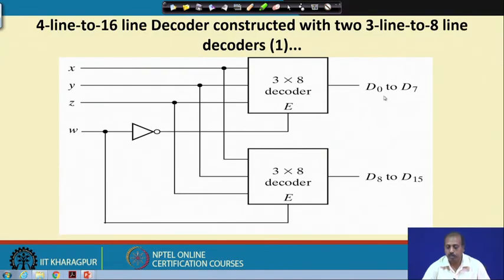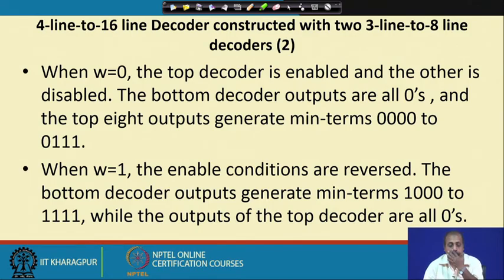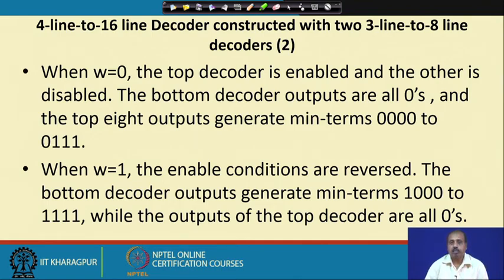When w equals 0, the top decoder is enabled and the bottom decoder outputs are all 0 because its enable input is 0. The top 8 outputs generate minterms 0000 to 0111. When w equals 1, the conditions are reversed: the upper decoder is disabled and the bottom decoder is enabled, realizing minterms 1000 to 1111, while the upper decoder outputs all 0's.